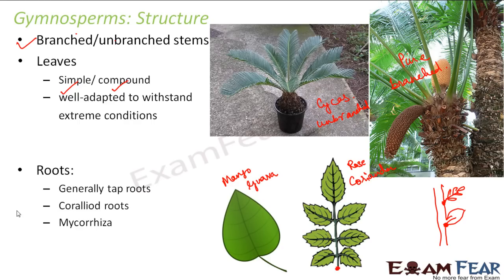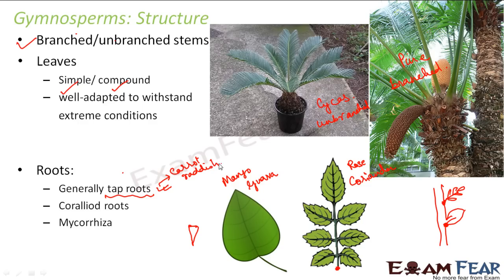Let us now talk about roots. Roots in gymnosperms are generally tap roots — large, tapering roots that grow downwards. They are quite difficult to uproot and transplant because they grow deep into the soil. Examples of tap roots are carrot and radish. However, roots can also be coralloid roots or exist as mycorrhiza.